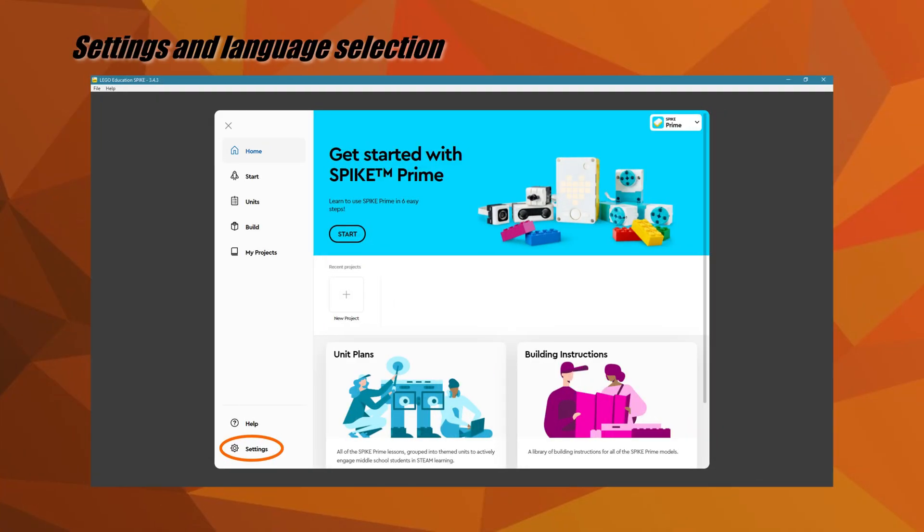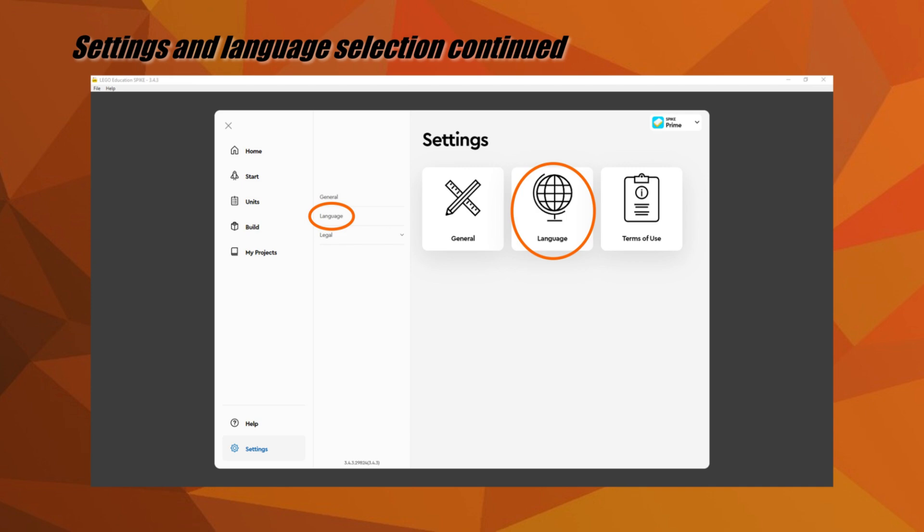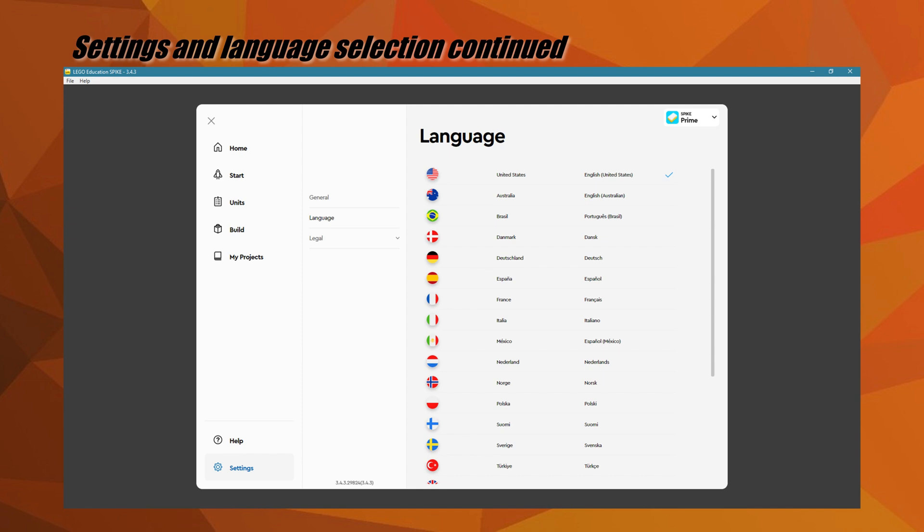Before we dive into programming, let's take a look at one of the settings for the software which might be useful for some of you. The link to the settings is on the bottom left of the screen. Did you know that the Spike Prime app is available in over 20 languages? Click on the language icon and you will be presented with a list of different languages that the app supports. Choose which one you want to use and then return to the homepage.